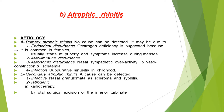Secondary atrophic rhinitis has a detectable cause. Infective causes include nasal granulomata such as scleroma and syphilis. Iatrogenic causes include radiotherapy or total surgical excision of the inferior turbinate. In hypertrophic rhinitis we do partial excision, but if you totally excise the inferior turbinate it can lead to atrophic rhinitis.